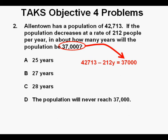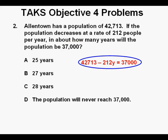Then we place equals 37,000. Now we have an equation we can solve for the unknown y to get our answer. To solve for our unknown y, the first thing we'll do is subtract 42,713 from both sides of the equation.